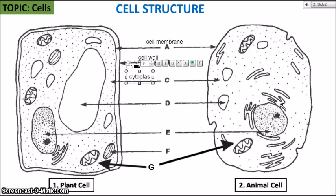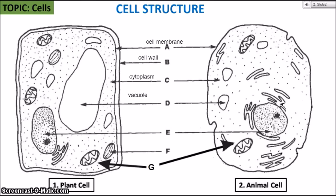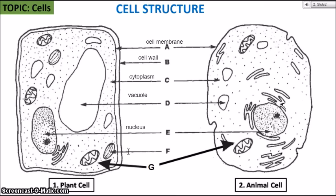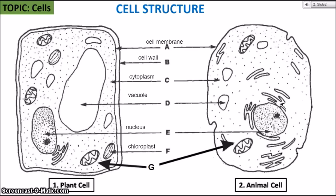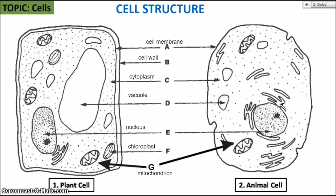C is the cytoplasm. D is the vacuole — you can clearly see that the vacuole is much larger in the plant cell compared to the animal cell. The plant cell's vacuole needs to be larger to store more water because plants are not able to get up and move to search for water. E is the nucleus, the control center of the cell where you have all the genetic material. F is the chloroplast, which we'll look at shortly, and G is the mitochondria — singular mitochondrion, plural mitochondria.